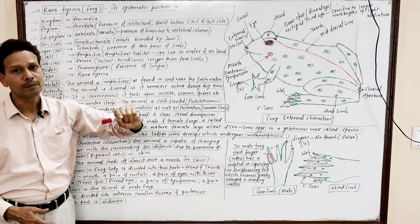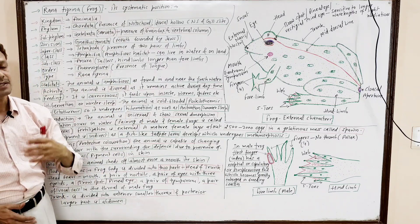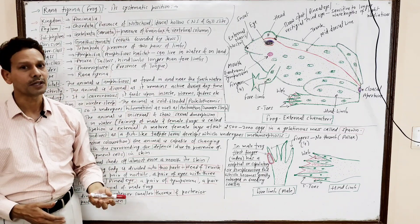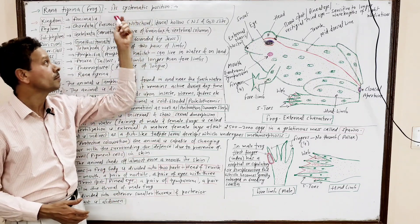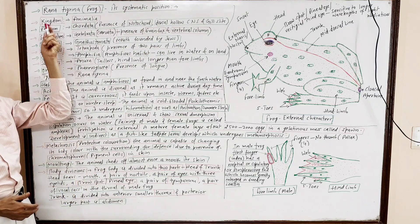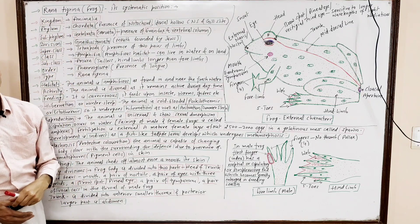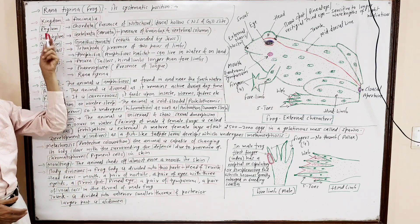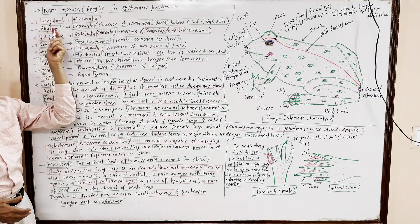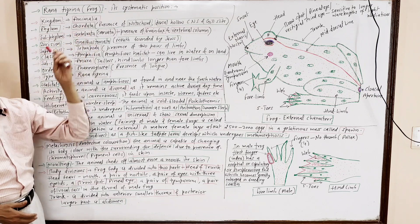First of all, we will discuss its classification, its systematic position. Kingdom: Animalia. Phylum: Chordata.